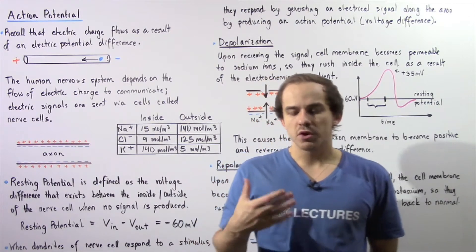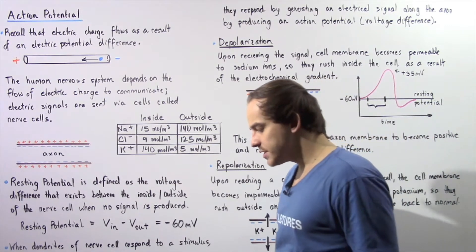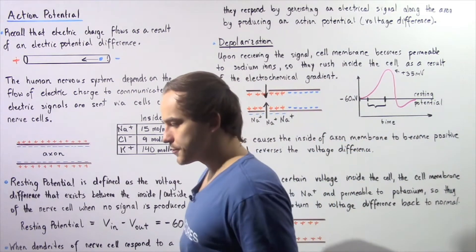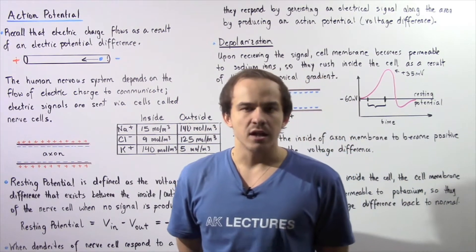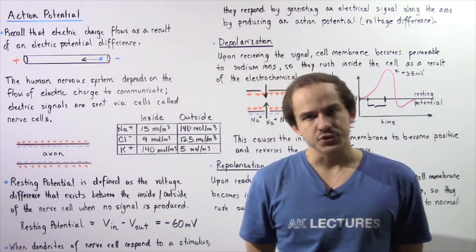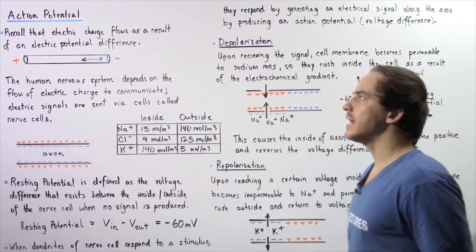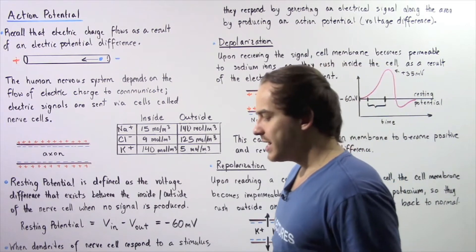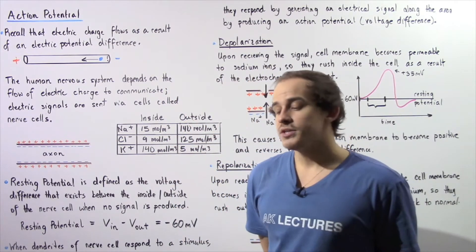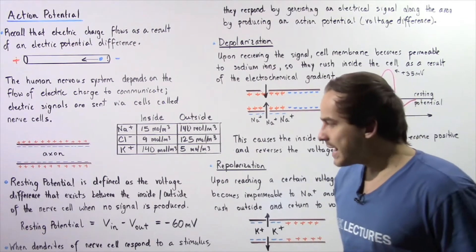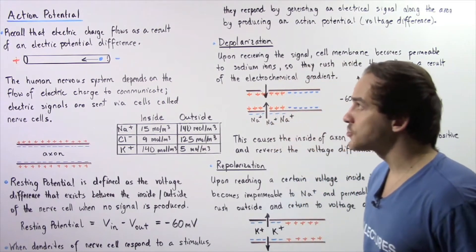As of now, we spoke about an important principle in physics known as the electric potential difference, or simply the voltage difference. Many different types of natural phenomena take place as a result of an electric potential difference. One particularly interesting application we'll talk about in this lecture will be the action potential. We're going to focus more on the physics aspect of the action potential.